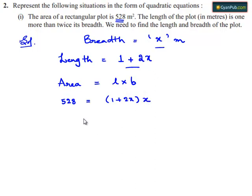So rearranging the terms, we get x times (1 plus 2x) equals 528. x times 1 is x, x times 2x is 2x squared. This equals 528.